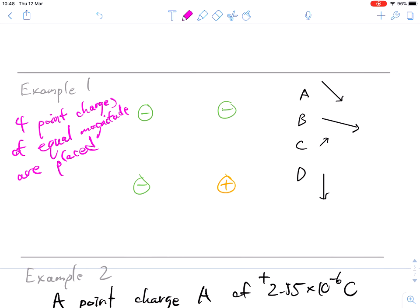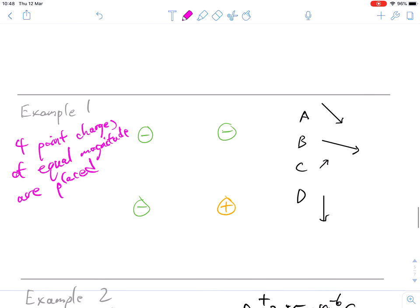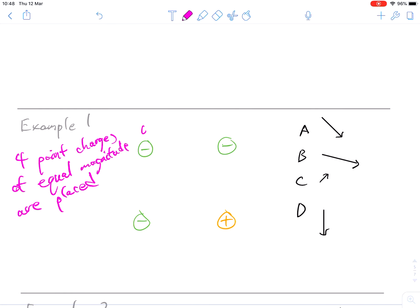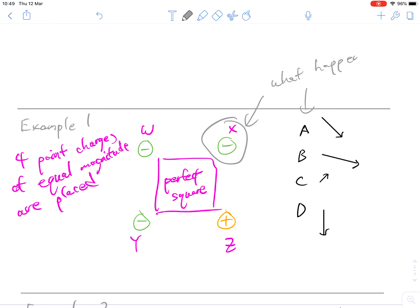Our first example here is we have four point charges of equal magnitude. So we have these guys. I'm going to write W, X, Y, and Z to label all of these guys. And these guys are arranged in a perfect square. And we're interested, what would happen, this is straight from Cognito by the way, what would happen to this guy? So we've got a multiple choice here. Which of those do you think is correct, A, B, C, or D? So take a moment, pause the video, have a little think about that.